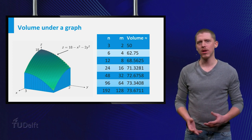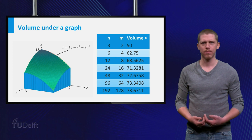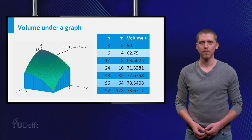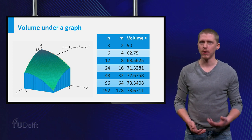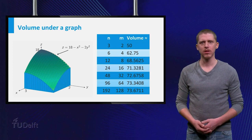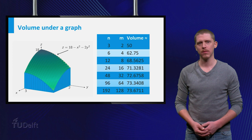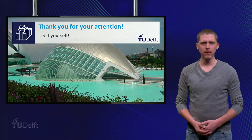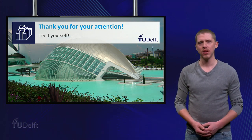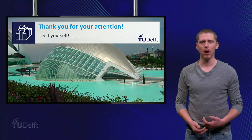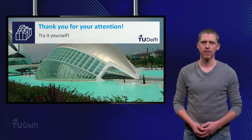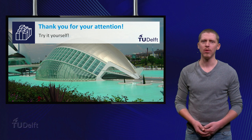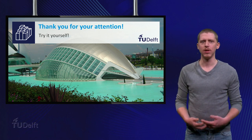Now the question remains: how can you compute the exact value of the volume? You could of course do this by computing the limit of the Riemann sum, where both m and n go to infinity. Just as in the case of a function of a single variable, the limit of a Riemann sum is, in fact, the definition of an integral. In class you are going to learn how this works for functions of two variables. In lots of cases where you can find antiderivatives, you will be able to compute the exact value of a volume under the graph of a function. In other cases, the best you can do is to compute an approximation by means of a Riemann sum as explained in this video. See you in class!